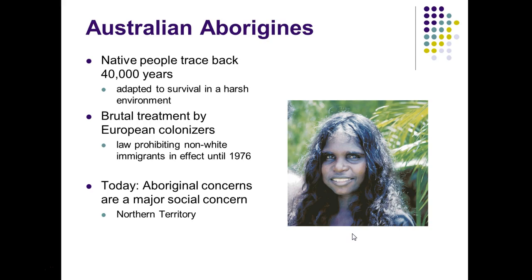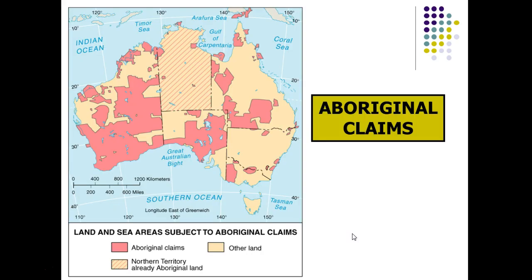For example, the Northern Territory has now been dedicated as aboriginal territory, but we still see higher rates of school dropout, drug abuse, alcoholism, and unemployment. You can see the extent of land claims and ocean claims by aboriginal Australians.